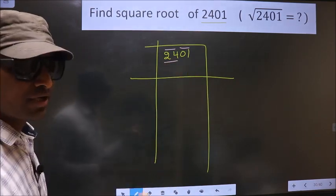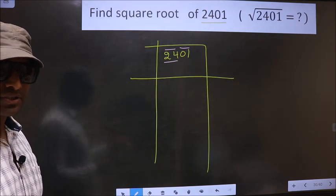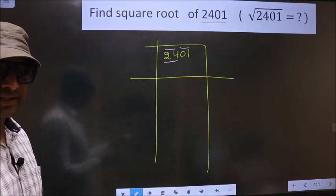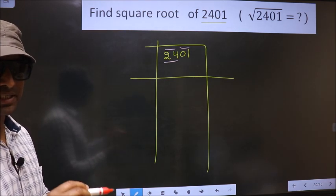24 is not a square number. So now you should see, 24 lies between which two square numbers.